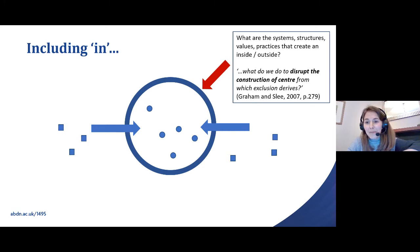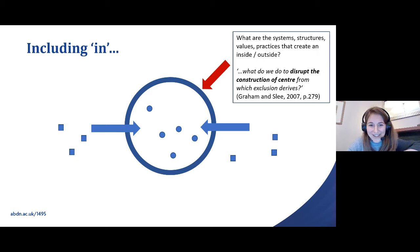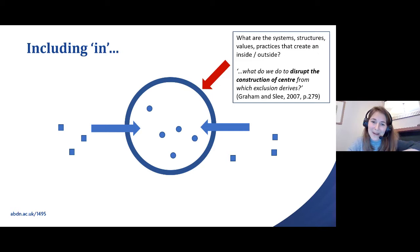Slee and Graham ask what we should do to disrupt the construction of the centre from which exclusion derives. The wording is very careful and purposeful: this centre, this idea that there is a centre, has been created. It's a social construct — it's not something woven into the rules of the universe. It is a social construct, and so there are things we can do to disrupt and challenge that — carefully, thoughtfully, and collectively.